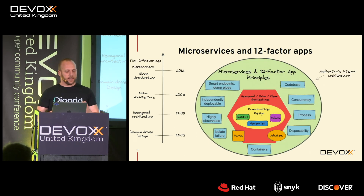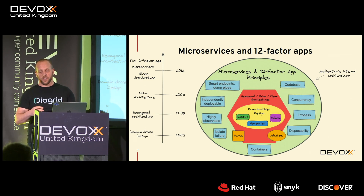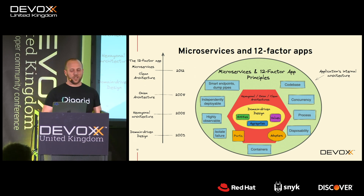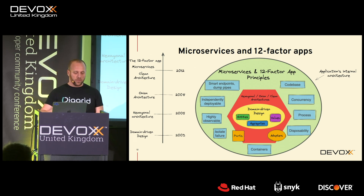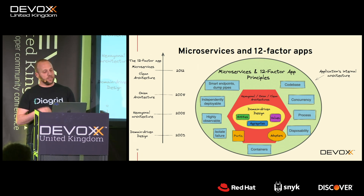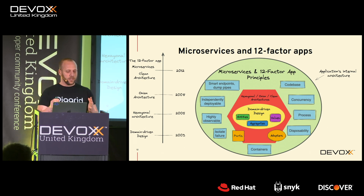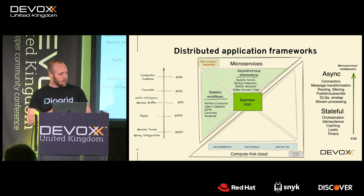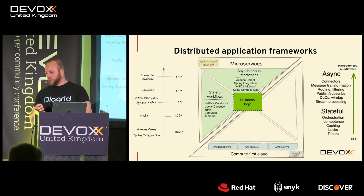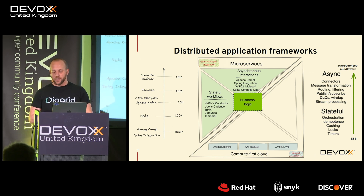Then came microservices and 12-factor apps. Microservices built on top of domain-driven design for finding the right boundaries and on top of hexagonal architecture for isolating external dependencies. It introduced principles saying that services should be independently deployable, releasable, and scalable on their own. And 12-factor introduced 12 concrete rules on how to develop applications that can be scaled on cloud environments. This sparked a first separation of middleware responsibilities outside of an ESB or centralized server into a separate layer.